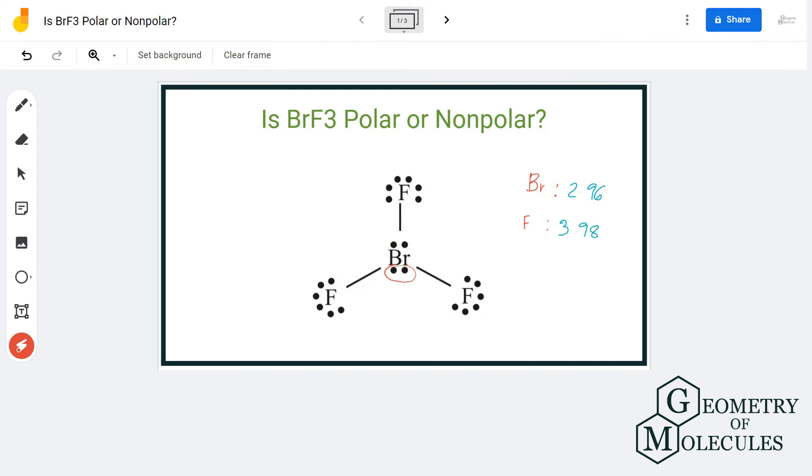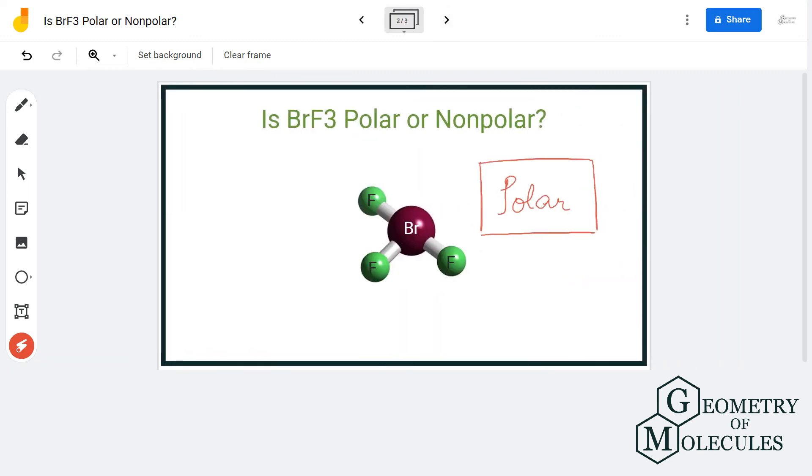These non-bonding pairs on the central atom distort the shape of the molecule and result in uneven distribution of charges, making this compound have a negatively charged pole and making this molecule a polar molecule.